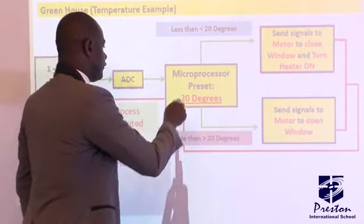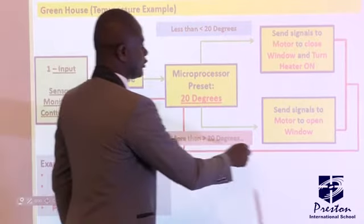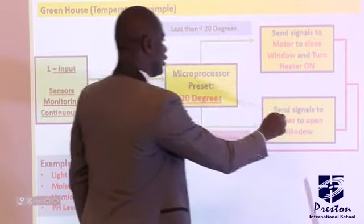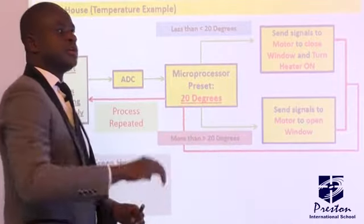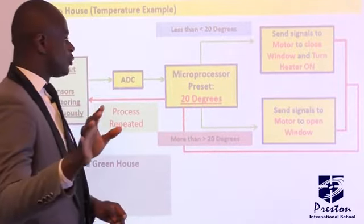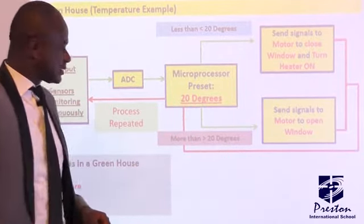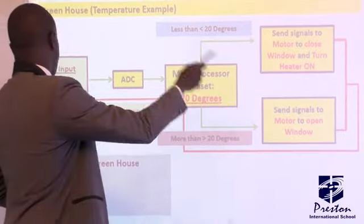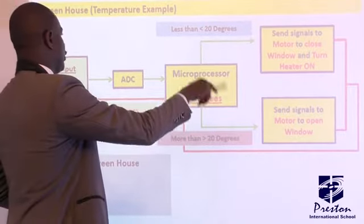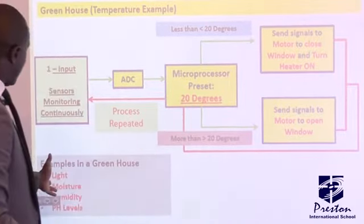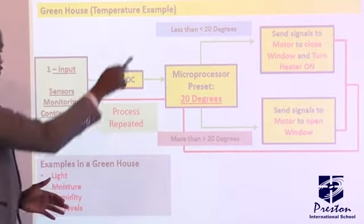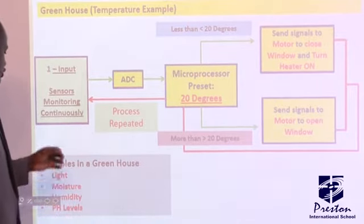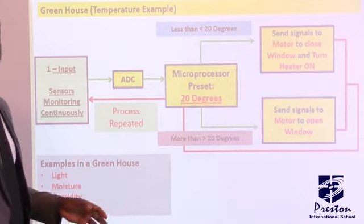If it is more than 20 degrees, it sends a signal to the motor to open the window so that some heat can escape, and that process just goes on and on. This applies not only to temperature, but also to light, moisture, humidity, and pH level.